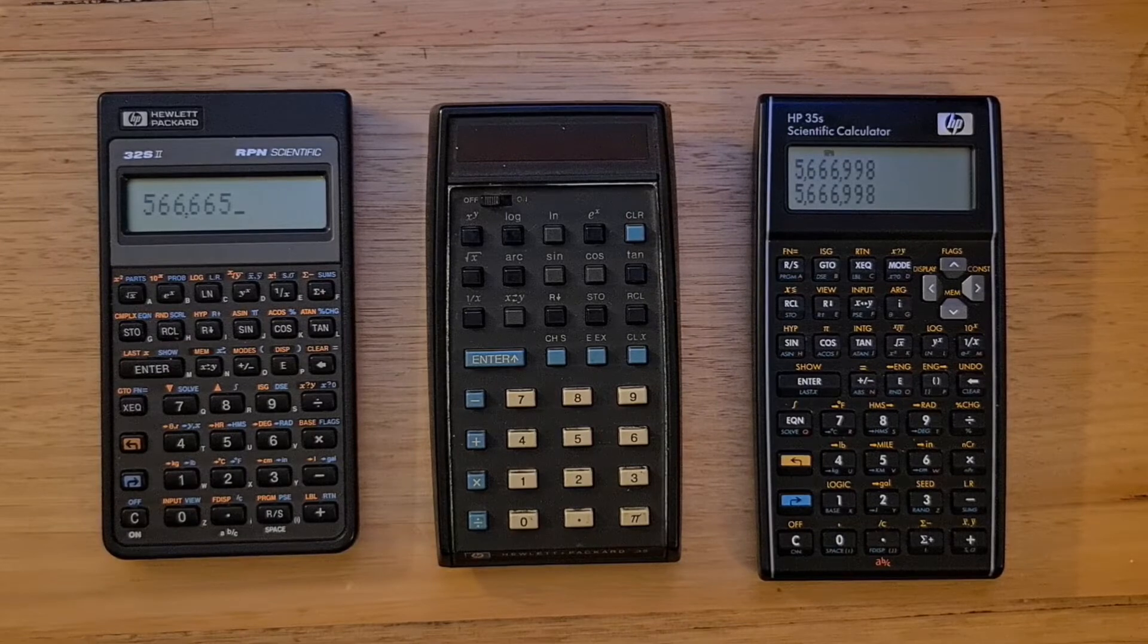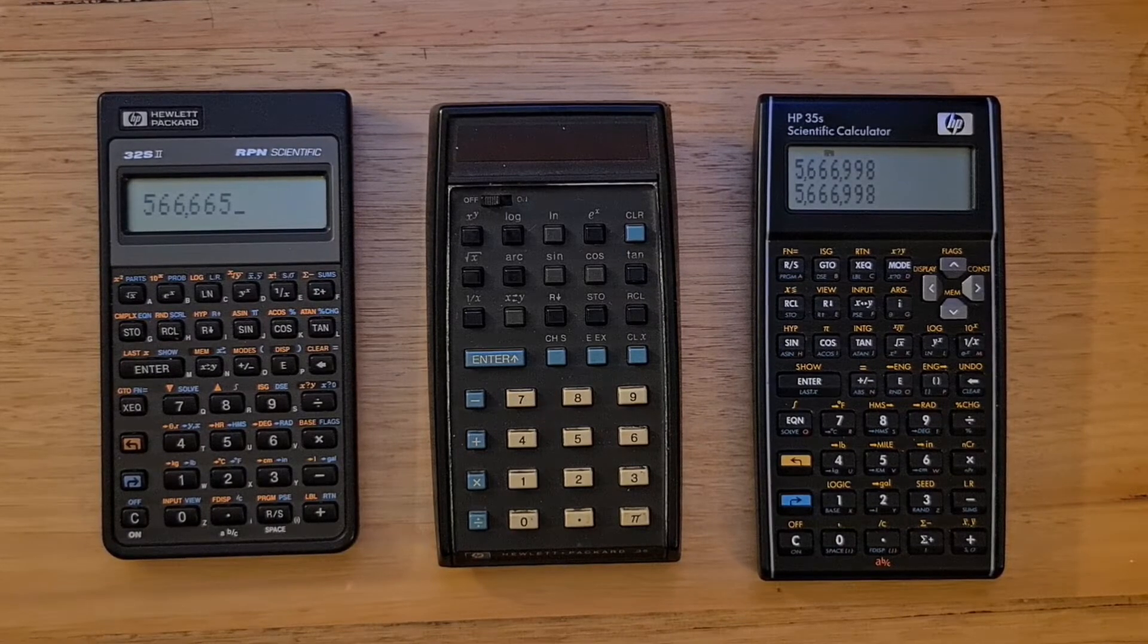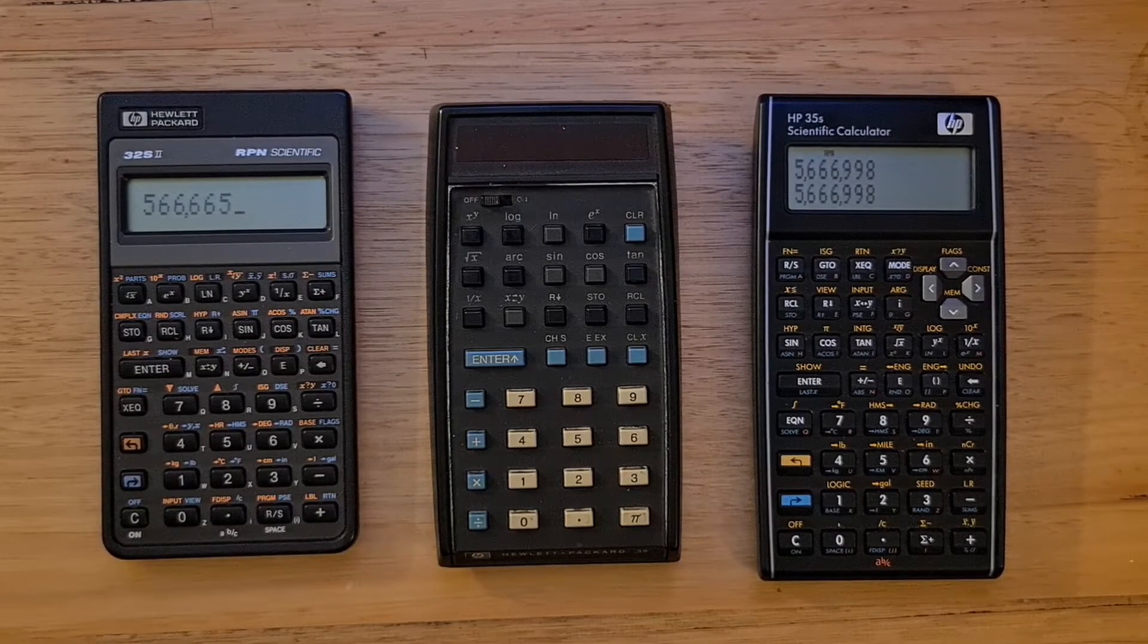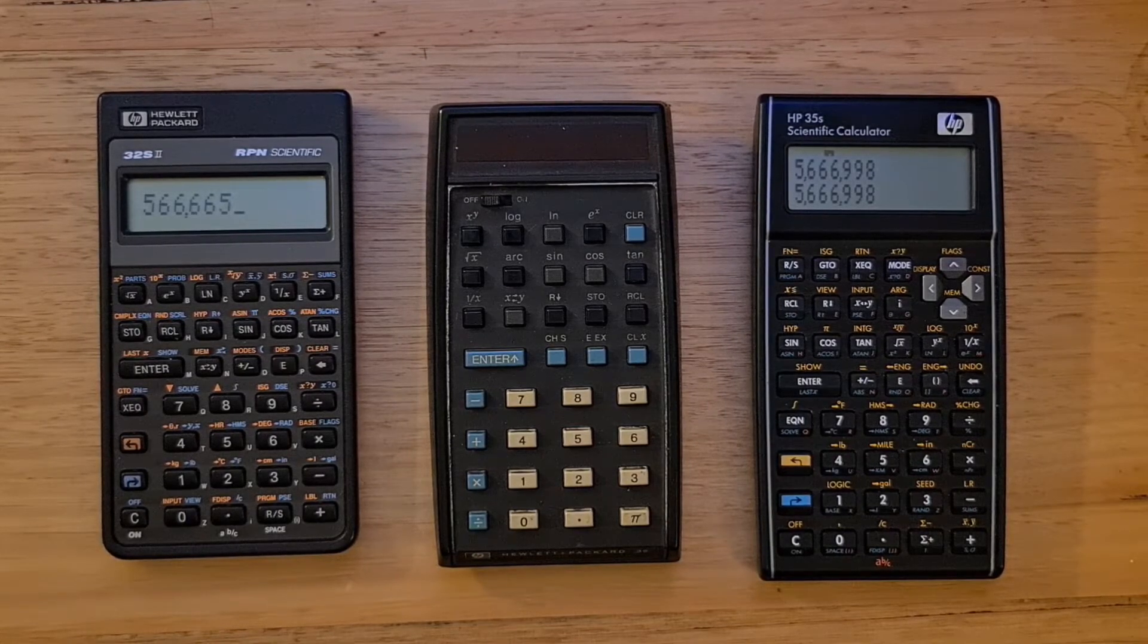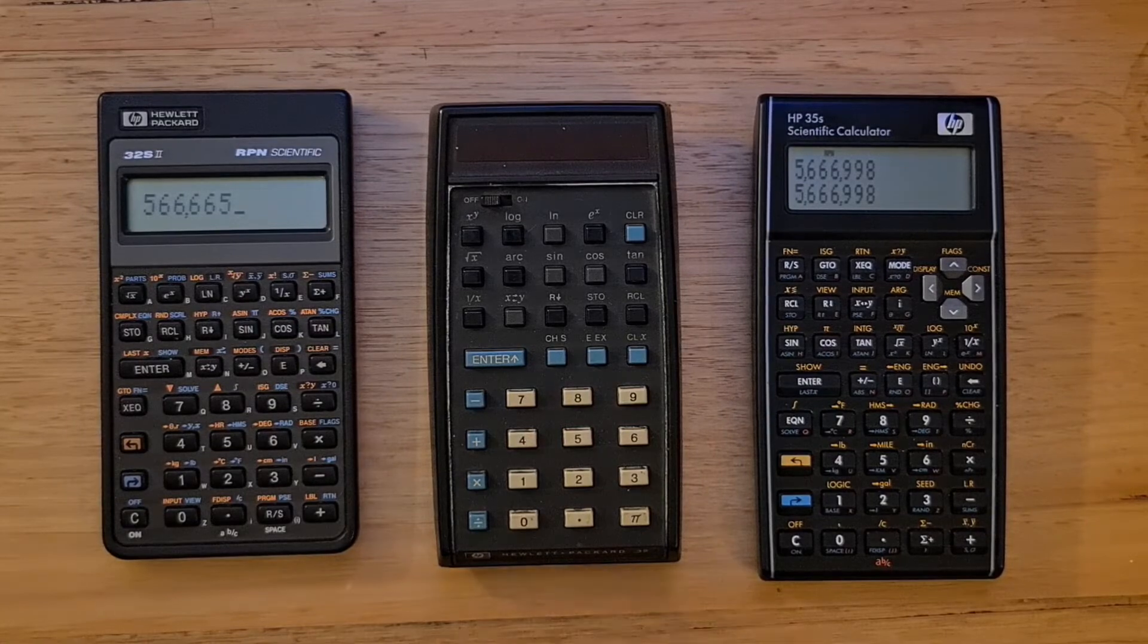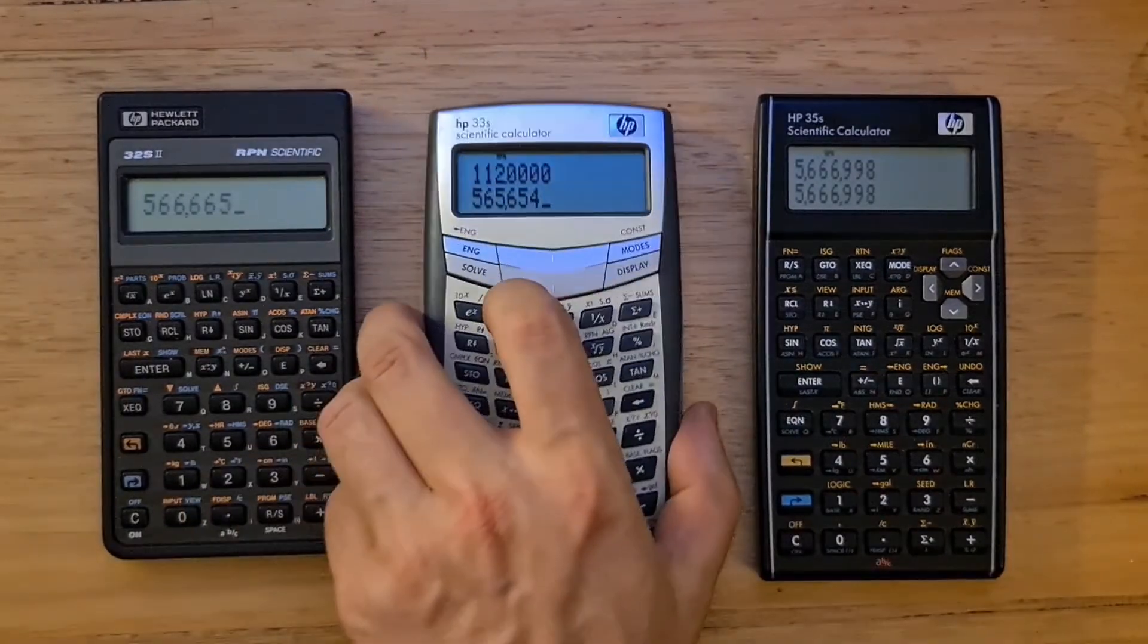Like the 33S, the 35S had a two-line display with a very clear dot matrix. Dimension-wise, the 35S is the largest of the three calculators, but not by a large amount.